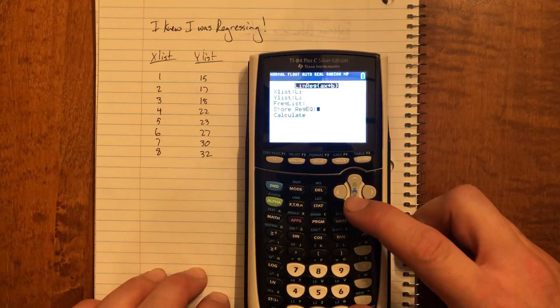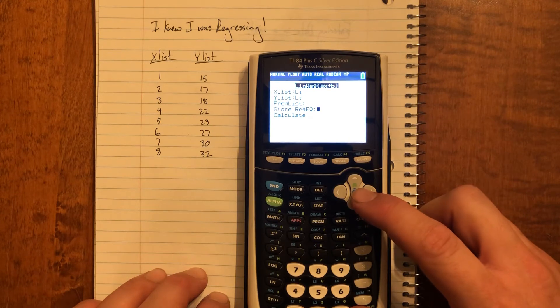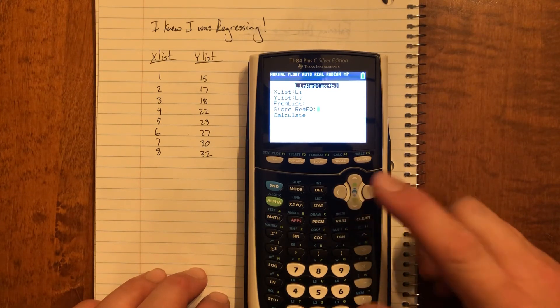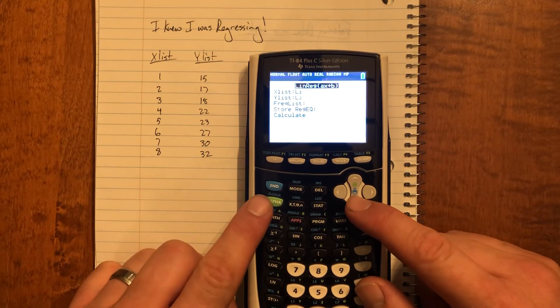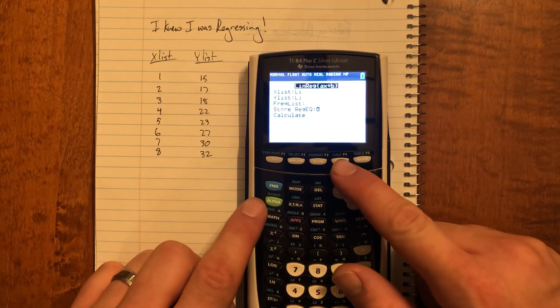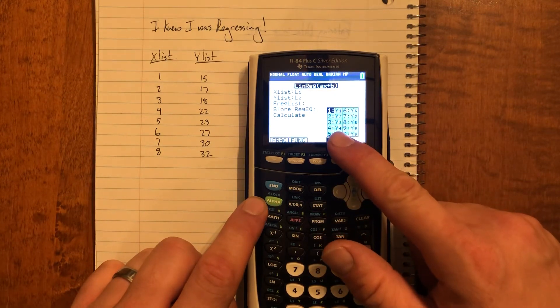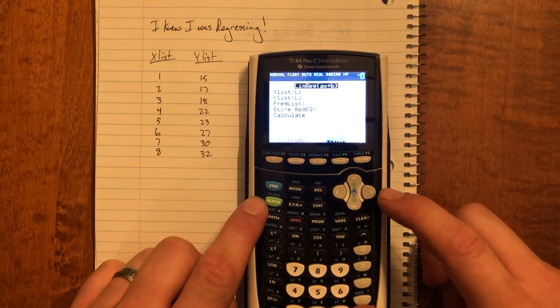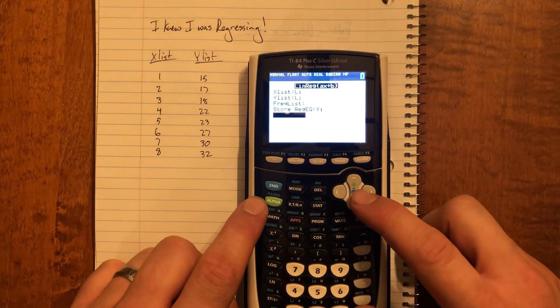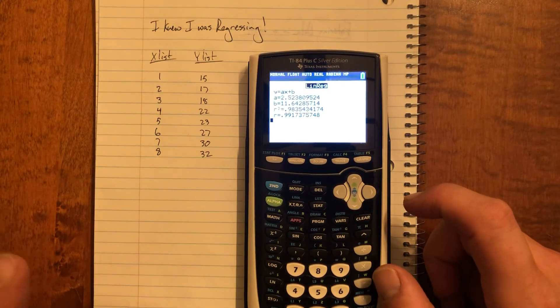Now under store reg equation, that's saying store the regression equation. It's going to give you values of a and b, that would be the slope and y-intercept of the linear relationship between x and y. I want to store that somewhere. I can store it in an equation by going alpha, trace, which brings up all of my y1, y2, and all these values that I can graph later. I'm just going to store it in y1, and then I'm going to press calculate.